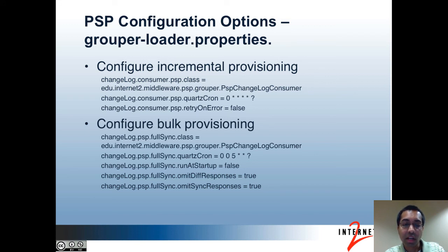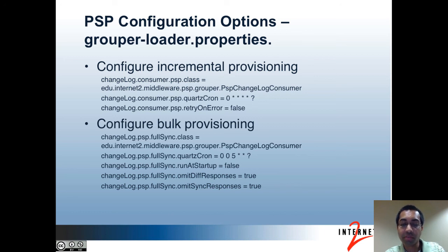For incremental provisioning, you can configure how to handle errors. If retry on error is set to false, the PSP will ignore failures and proceed with the next change. If it's set to true, the PSP will retry failed changes until they succeed, and only move on to the next change if the failure succeeds. For bulk provisioning, you can configure if you want it to run when the daemon starts. You can also configure whether to emit individual diff and sync responses in bulk responses — this is useful to conserve memory, especially if a lot of changes are going to be made. The Grouper log files will contain individual operations regardless.